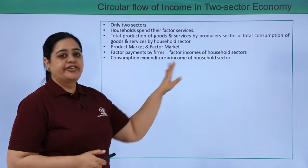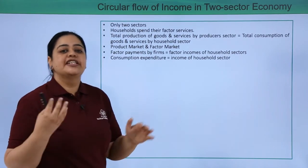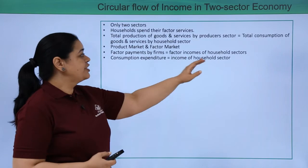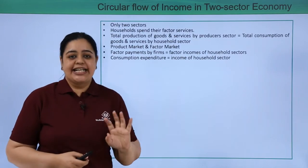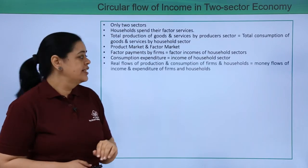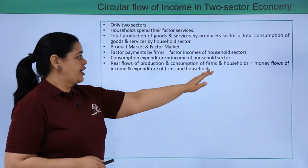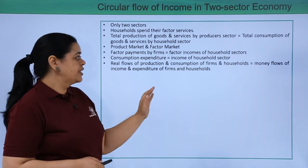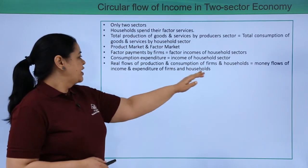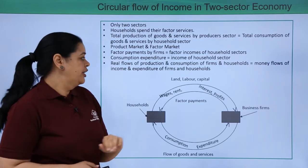Whatever the household sector is going to earn, they are going to spend — that is, they are going to expend. So the consumption expenditure would be exactly equal to the income of the household sector. The real flow of production and consumption of firms and households would be equal to the money flow of income and expenditure of firms and households.